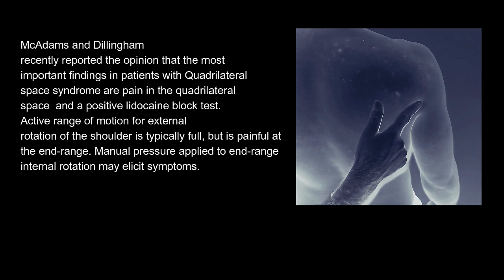McAdams and Dillingham recently reported that the most important findings in patients with Quadrilateral Space Syndrome are pain in the quadrilateral space and the positive lidocaine block test. Active range of motion for external rotation of the shoulder is typically full, but is painful at the end range. Manual pressure applied to end-range internal rotation may elicit symptoms.